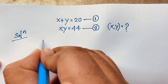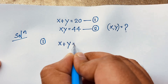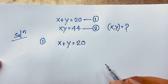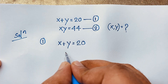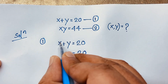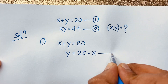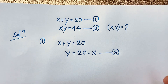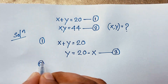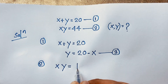According to the first equation, x plus y is equal to 20. We can rearrange this to get y is equal to 20 minus x. This is our third equation. Now our second equation gives us xy is equal to 44.